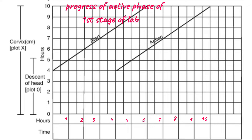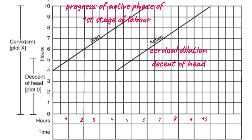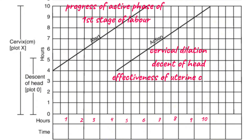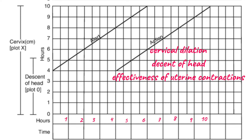This section includes cervical dilation, which we plot with X, and the descent of the presenting part on the head graph, which we plot with O. It also includes plotting for the effectiveness of uterine contractions. We start plotting this part of the partograph when cervical dilation is 4 centimeters or more.